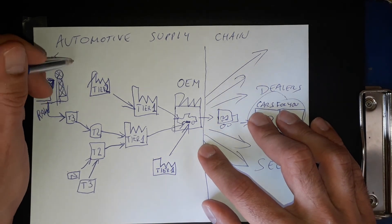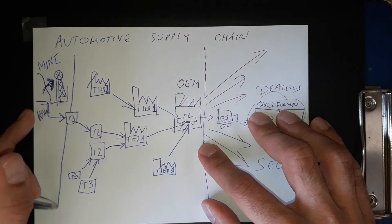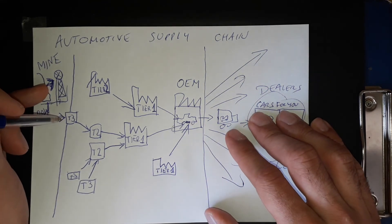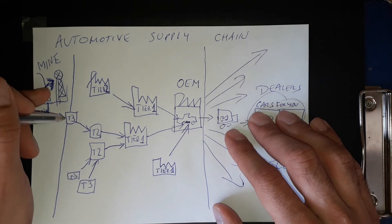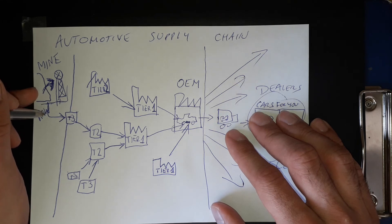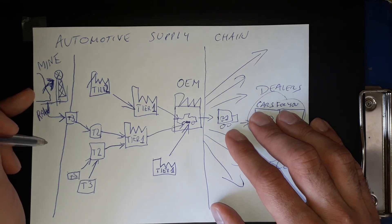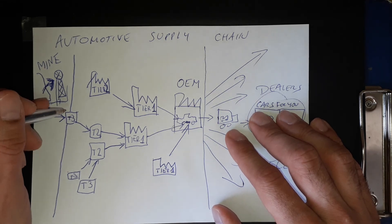And here starts the supply chain. So the supply chain starts from the first point where something is manufactured. Raw material factory, or raw material mine, is not included into the supply chain.